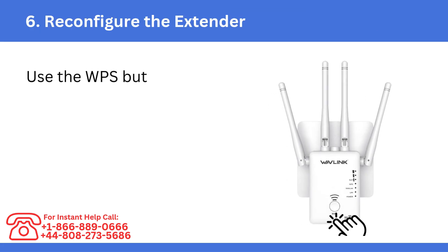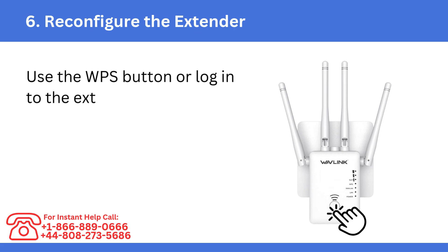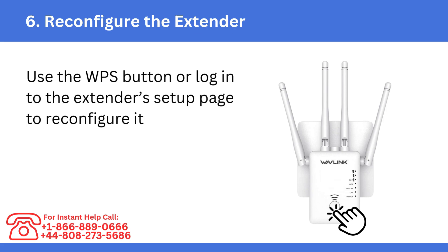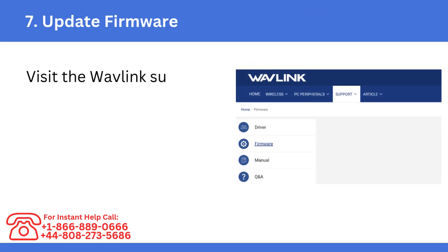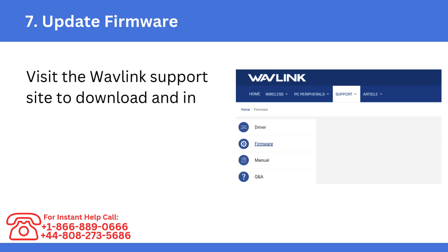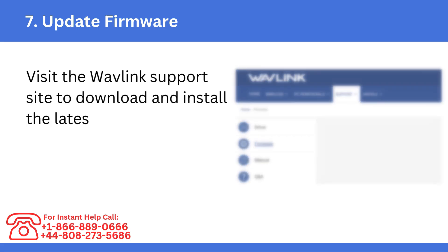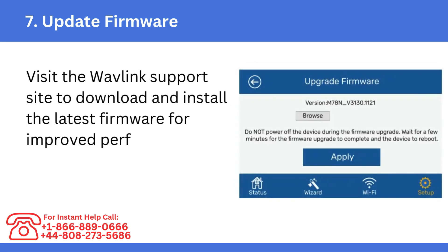Sixth, reconfigure the extender. Use the WPS button or log in to the extender's setup page to reconfigure it with your router. Seventh, update the firmware. Visit the Wavelink support site to download and install the latest firmware for improved performance and bug fixes.